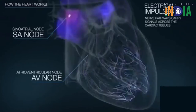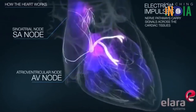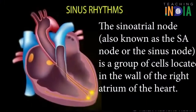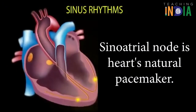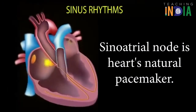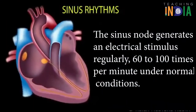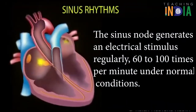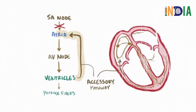First of all, the Sinoatrial node generates an electrical signal. The Sinoatrial node consists of special cells located in the wall of the right atrium. The Sinoatrial node is the heart's natural pacemaker. Under normal conditions, it produces 60 to 100 electrical stimuli per minute, which activates the upper chambers — the atria.